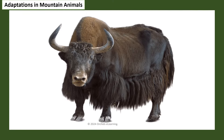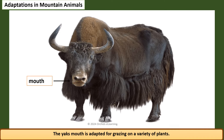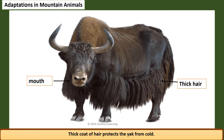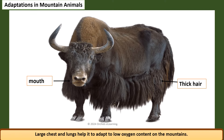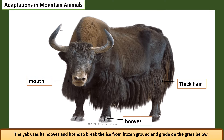The yak has several adaptations to survive in mountains. Its mouth is adapted for grazing on a variety of plants. A thick coat of hair protects it from cold. Large chest and lungs help it adapt to low oxygen content in mountains. The yak uses its hooves and horns to break ice from frozen ground and graze on the grass below.